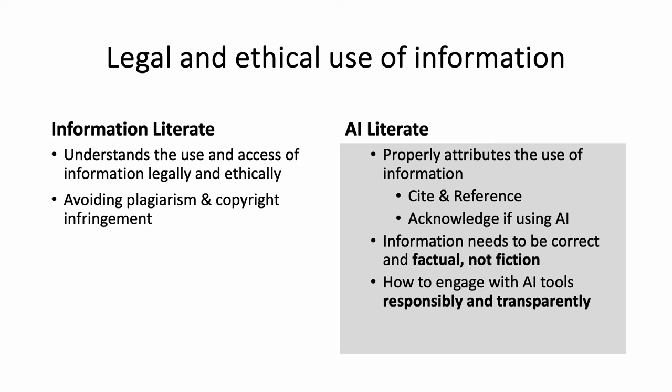The last information literacy skill is understanding the use and access of information legally and ethically. In simple terms, this means that students must avoid plagiarism and copyright infringement. This has always been important, but it's even more relevant in the age of AI. If a student uses AI-generated text, they must cite and reference it, and in most cases also acknowledge their use of AI, depending on the guidelines set in class.